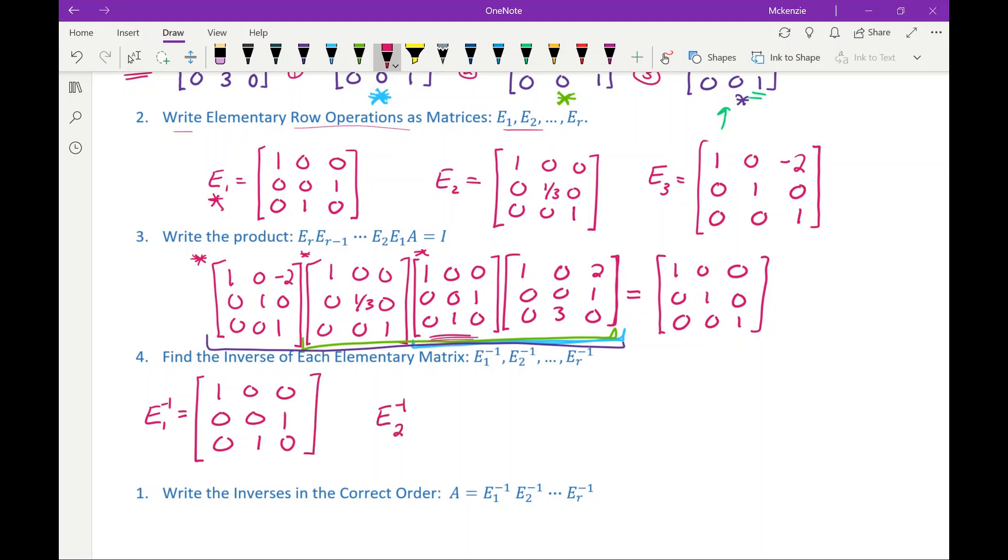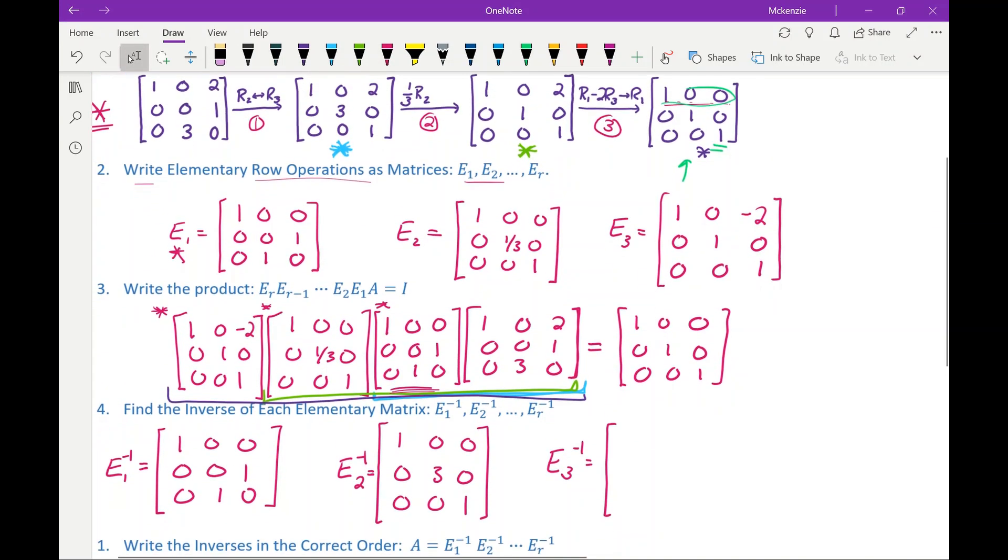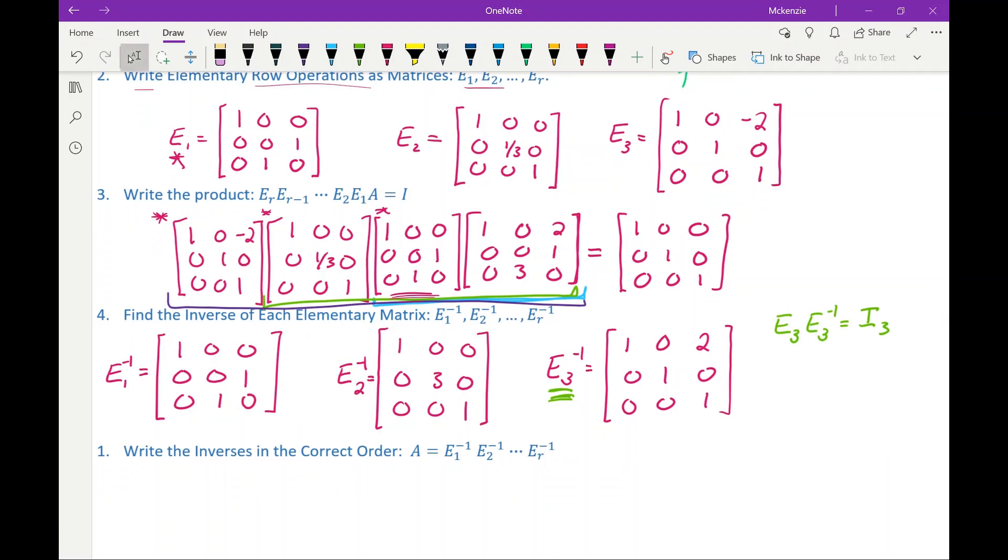E2 inverse, we multiplied row two by a third. So to undo the operation of multiplying by a third, well, you should multiply by three. And lastly, E3 was the operation of adding or subtracting two of row three from row one. So the opposite of that is adding two of row three to row one. And you can test this out to make sure that these actually are inverses. For example, if we take E3 here and E3 inverse, we should be able to do E3 times E3 inverse and get the identity matrix. So test that out and make sure that works and make sure you believe it.